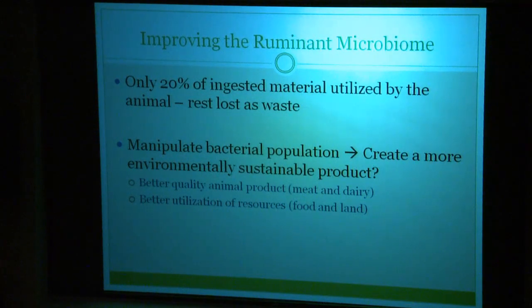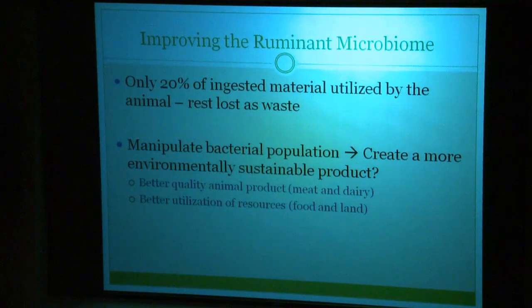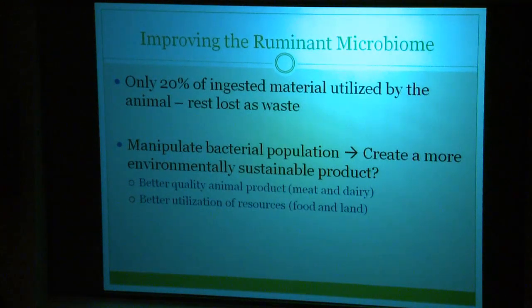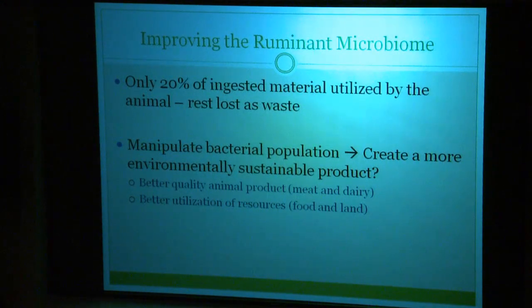Despite the strong symbiotic relationship between these bacteria and the ruminants, the system is actually not completely efficient. Recent studies have shown that of all of the material ingested by the animal, only about 20% is utilized and the rest is lost as waste. However, it is possible to manipulate bacterial populations. We know that probiotics in humans can be used to modulate the human GI tract microbiome. If we can similarly modulate the microbial community in ruminants, we can perhaps increase the efficiency of nutrient extraction, leading to a more environmentally sustainable animal product for meat and dairy production, and perhaps better utilization of resources for food and land.